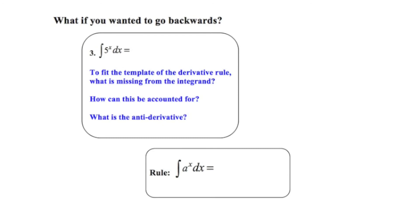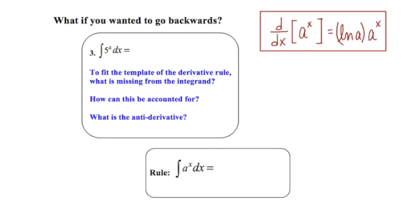In the first four slides, we talked about taking the derivative of an exponential function with a base other than e. Now we're going to talk about finding the antiderivative — what if you wanted to go backwards? To fit the template of the derivative rule, what is missing from the integrand? The basic derivative rule gives us the natural log of the base times a restatement of the problem, so we need that present in the integrand. In this problem, we are missing the ln5.